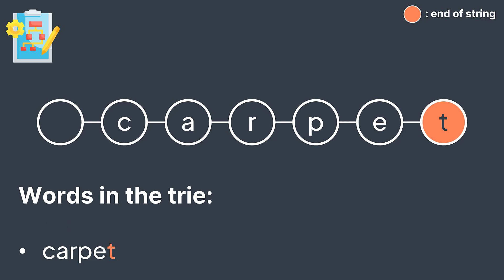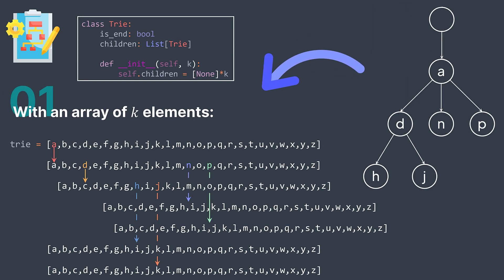There exist multiple implementations for the trie node. I'll show you four of them. The first is to use an array of k elements, where k is the size of the alphabet. For example, if we're dealing with lowercase letters only, we put an array of 26 elements, one for each letter. An element can either be null or contain a reference to a node, depending on whether a string passes through that letter. In reality, letters are not stored — we work with indices only.